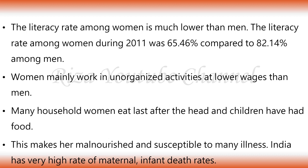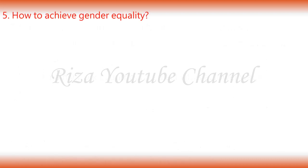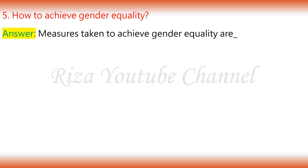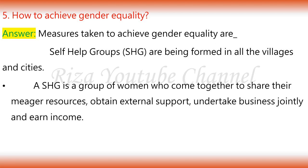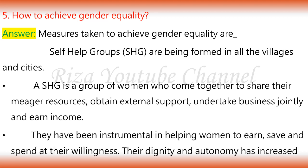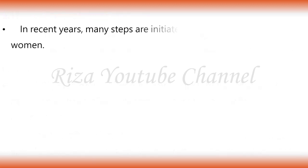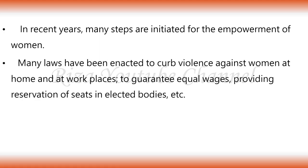5. How to achieve gender equality? Measures taken to achieve gender equality: Self-help groups are being formed in all the villages and cities. A SHG is a group of women who come together to share their meager resources, obtain external support, undertake business jointly and earn income. In recent years, many steps are initiated for the empowerment of women. Many laws have been enacted to curb violence against women at home and at workplaces, to guarantee equal wages, providing reservation of seats in elected bodies, etc.